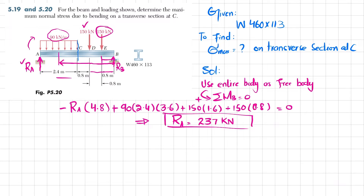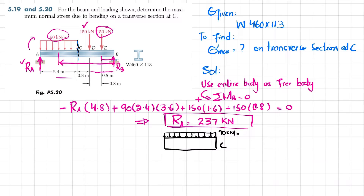Now we cut the beam at point C to find the internal moment. We draw the free body diagram of the left portion. The distributed load is 90 kN/m, the reaction force R_A = 237 kN acts upward, and the distance from A to C is 2.4 m.